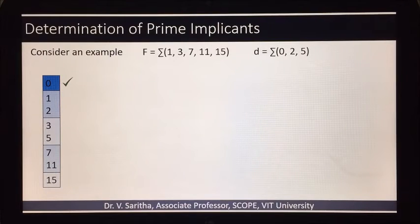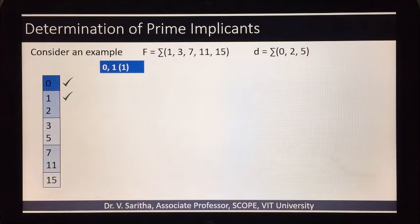Comparison goes with the consequent groups. 0 and 1 will compare to get the next pair, so 0,1 with difference 1. 0,2 with difference 2.